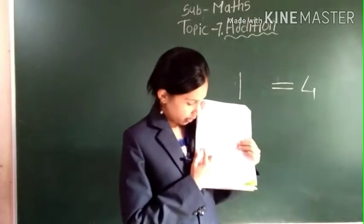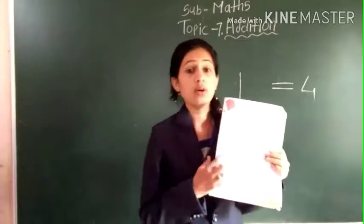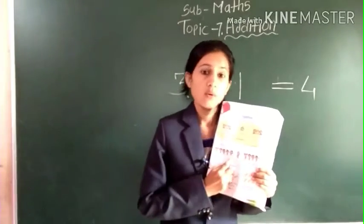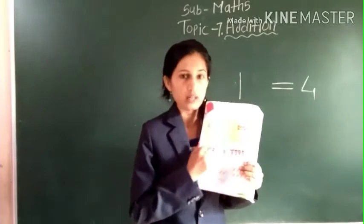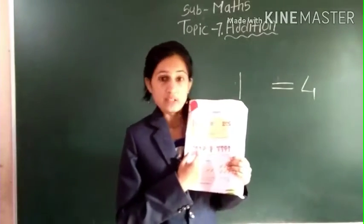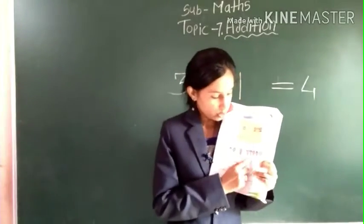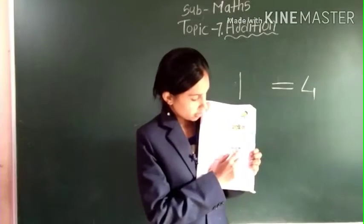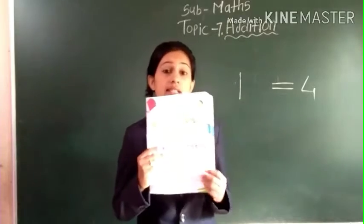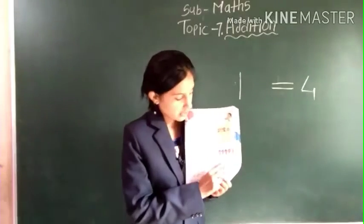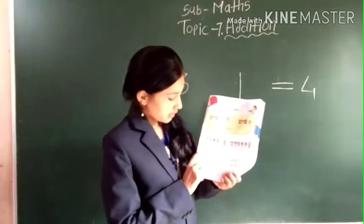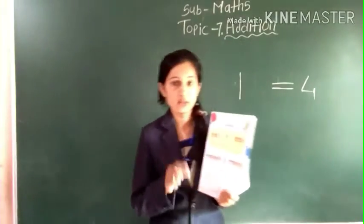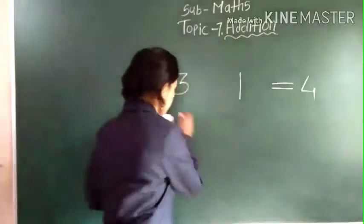Let's count: 1, 2, 3, 4, 5 — 5 girls are there. Also 1 more girl joined. So now let's count the total girls: 1, 2, 3, 4, 5, 6 — 6 girls are there.